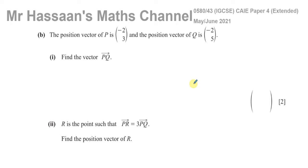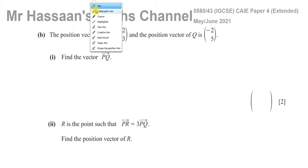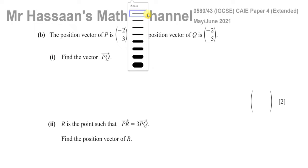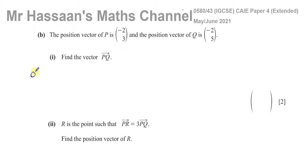It says the position vector of P is (-2, 3) and the position vector of Q is (-2, 5). Find the vector from P to Q. The position vector of a point means the vector from the origin to that point — so this is the vector O to P.